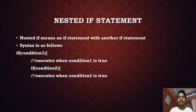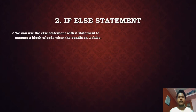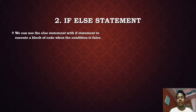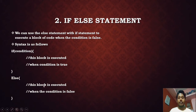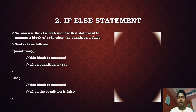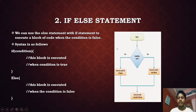If-else statement: we can use the else statement with the if statement to execute a block of code when the condition is false. The syntax is: if the condition is true, this block will be executed; if the condition is false, this block will be executed. In the flowchart, the true path goes to the if block and the false path goes to the else block.